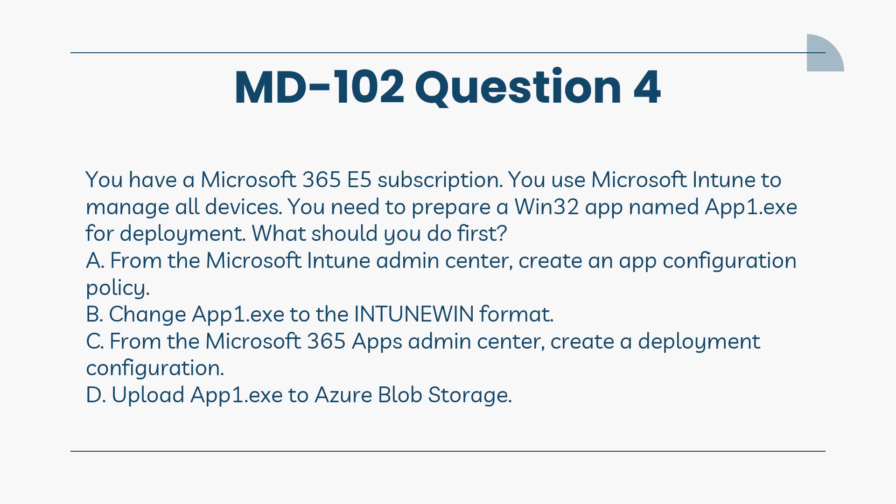You have a Microsoft 365 E5 subscription. You use Microsoft Intune to manage all devices. You need to prepare a Win32 app named App1.x for deployment. What should you do first? A. From the Microsoft Intune Admin Center, create an app configuration policy. B. Change App1.x to the IntuneWin format. C. From the Microsoft 365 Apps Admin Center, create a deployment configuration. D. Upload App1.x to Azure Blob Storage. The answer is B.